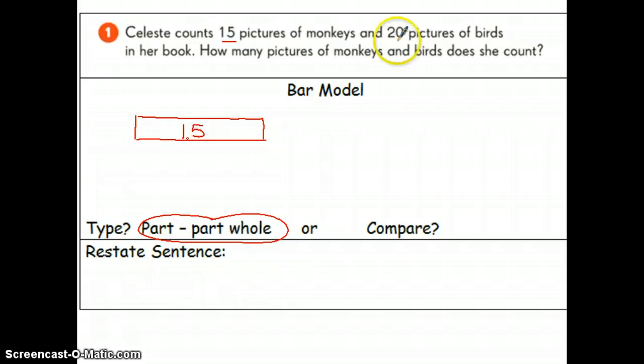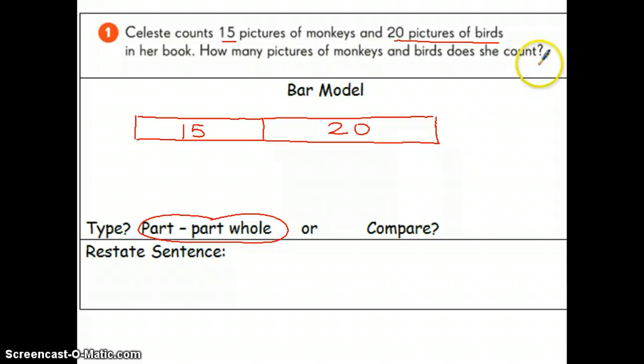Now I'm looking at my second number and I have 20 pictures of birds. 20 is larger than 15 so I'm going to make this bar just a little bit longer so it is accurate. And the question here is how many pictures of monkeys and birds does she count? So I'm going to make a bracket and put the question mark here because I'm looking for how many pictures she counted in all.